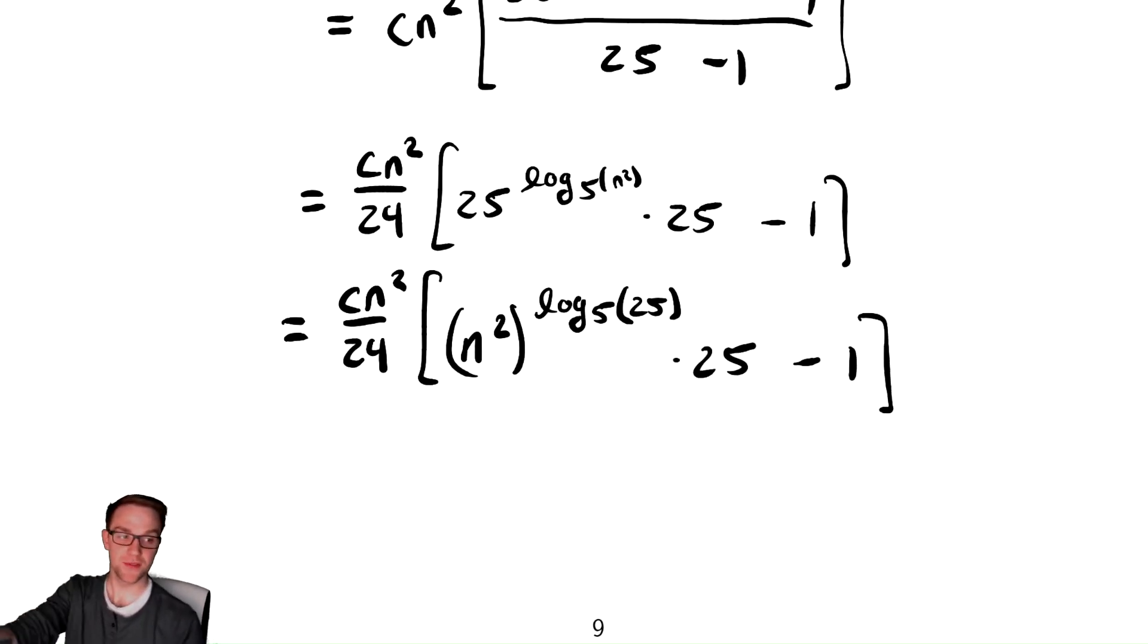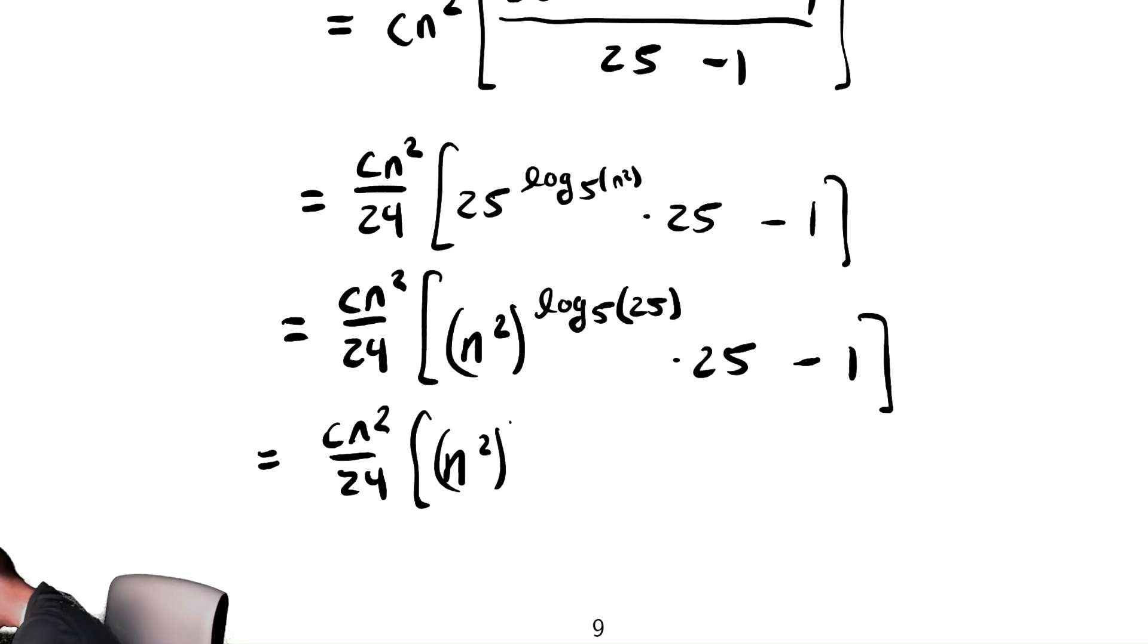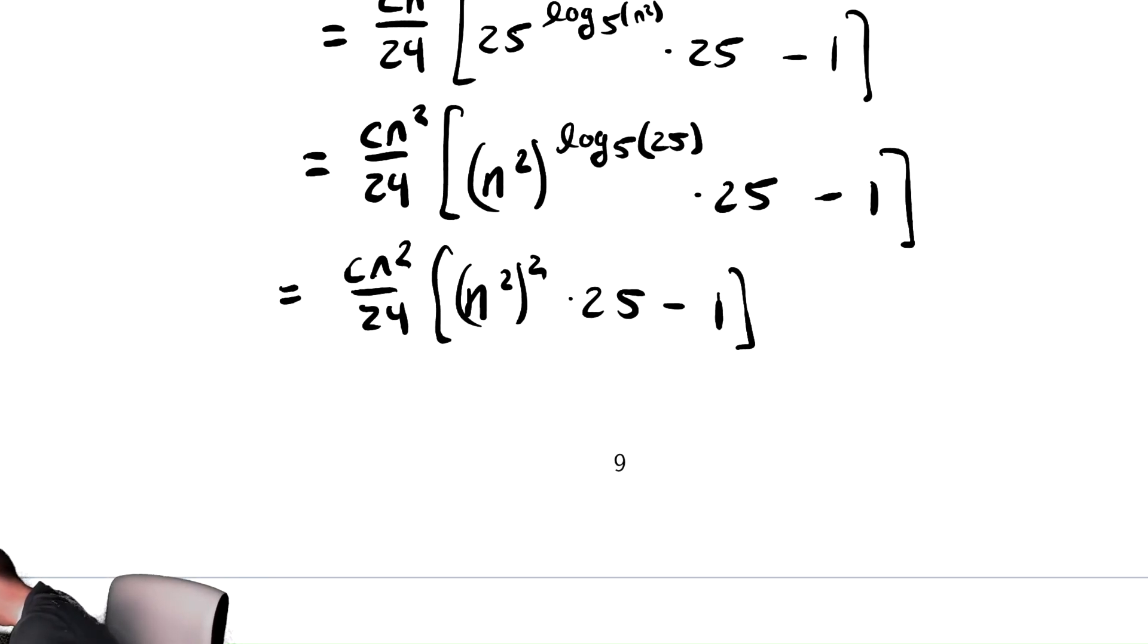And then log base 5 of 25 is 2, so this is equal to cn squared divided by 24 times n squared, and then that log simplifies to 2, times 25, minus 1. Then finishing up our algebra, we have cn squared divided by 24 times quantity 25 n to the 4th minus 1.